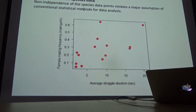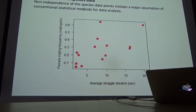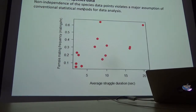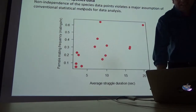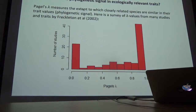Low phylogenetic signal means species are all over the place and relatedness doesn't predict similarity in trait values. Whereas high phylogenetic signal means that relatedness does predict similarity of trait values. Non-independence of species data points violates a major assumption of all conventional statistical methods — we assume that our data points are randomly sampled from a population, and that the values of one species in no way affect the value you get for another data point.